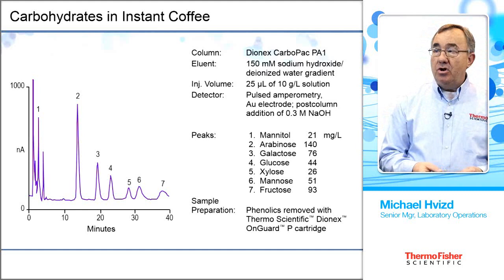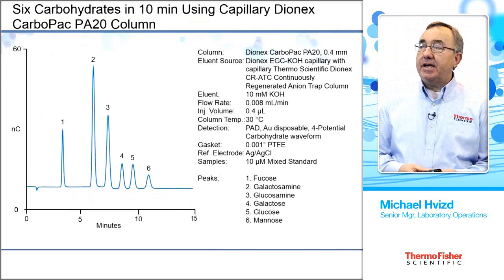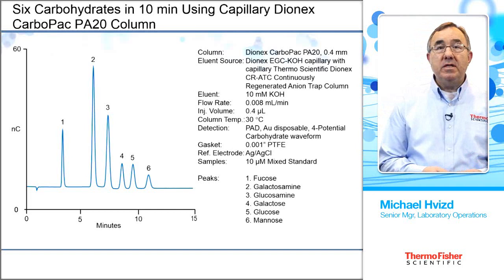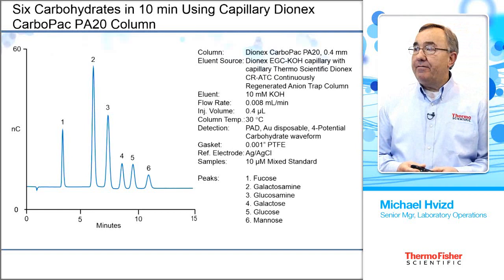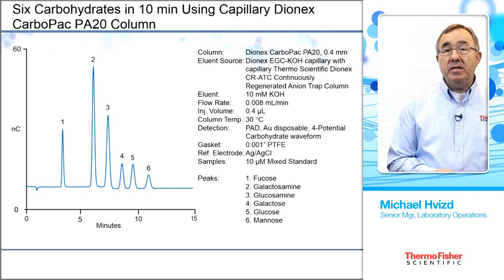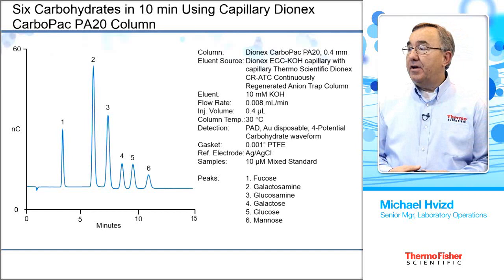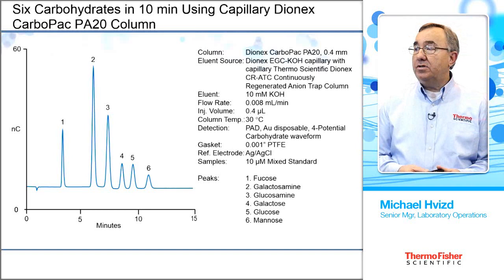This next slide shows a PA20 separation in capillary format — a column that is only 0.4 millimeters in diameter instead of the normal 2 or 4 millimeter column — so we run at very low flow rates: 8 microliters per minute on the capillary system. This separation, pretty standard on a PA20 column, uses the same packing as the 2 mm and 4 mm columns with no difference in the separation itself. It's about an 11 or 12 minute run, eluting the mix of six: fucose, the two amino sugars galactosamine and glucosamine, as well as three monosaccharides — galactose, glucose, and mannose.